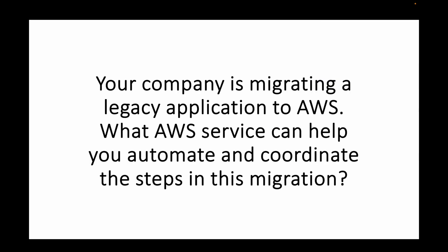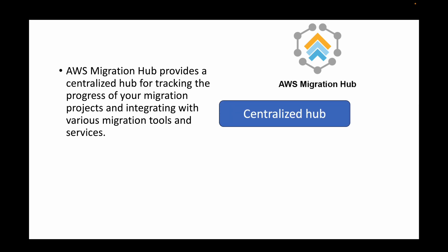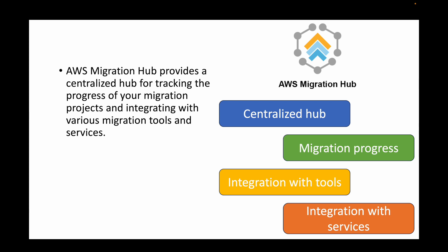The next question is: your company is migrating a legacy application to AWS. Which service can help you automate and coordinate the steps in this migration and provide a centralized view? For this we have AWS Migration Hub, which provides a centralized, all-in-one-place service for tracking the progress of your migration across different projects. It also integrates with various tools and services — whether it's database migration, application migration, or server migration — everything is centralized in one place.